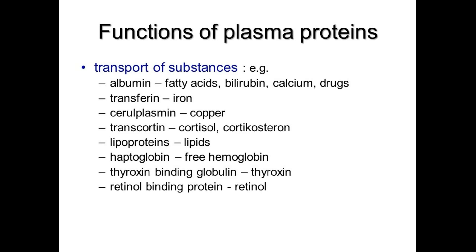Functions of plasma proteins — transport: albumin transports fatty acids, bilirubin, calcium, and drugs. Transferrin transports iron ions. Ceruloplasmin transports copper. Transcortin transports cortisol and corticosterone. Lipoproteins transport lipids. Haptoglobulin transports free hemoglobin. Thyroxine-binding globulin transports thyroxine. Retinol-binding protein transports retinol.